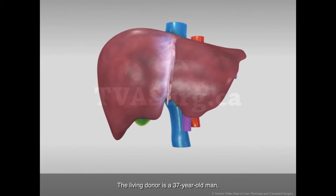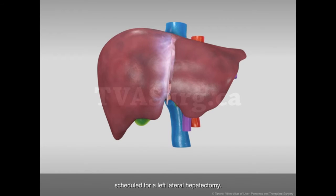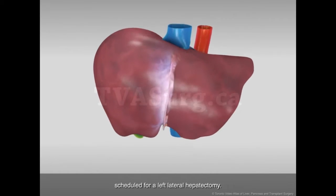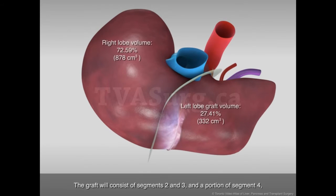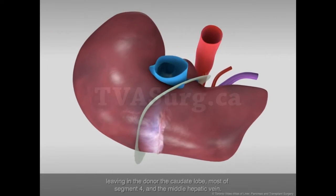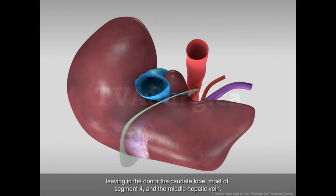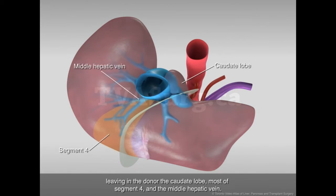The living donor is a 37-year-old man scheduled for a left lateral hepatectomy. The graft will consist of segments 2 and 3, and a portion of segment 4, leaving in the donor the caudate lobe, most of segment 4, and the middle hepatic vein.